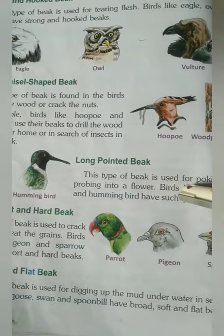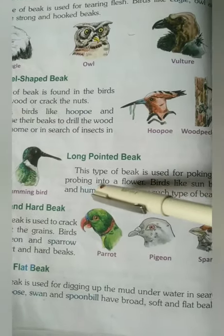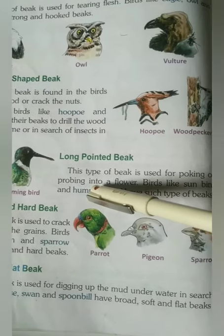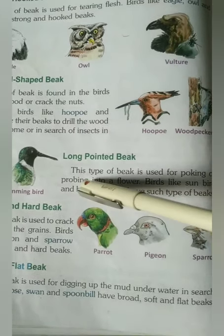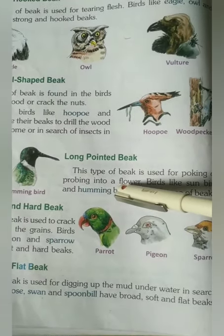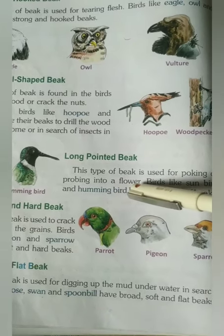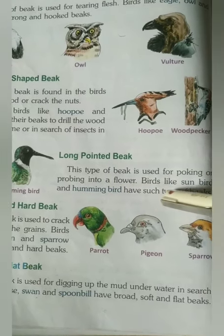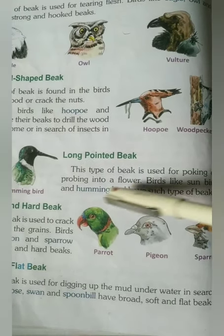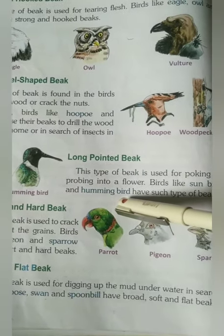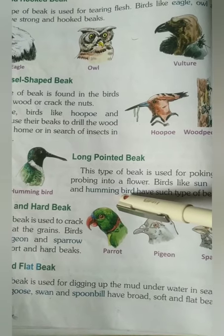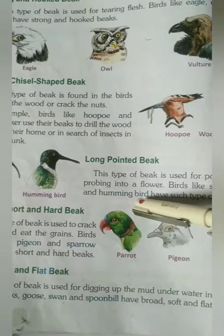The third one is the long pointed beak. This type of beak is used for poking or probing into a flower — meaning searching for insects inside a flower. For example, hummingbird. Hummingbird is the smallest bird in the world.